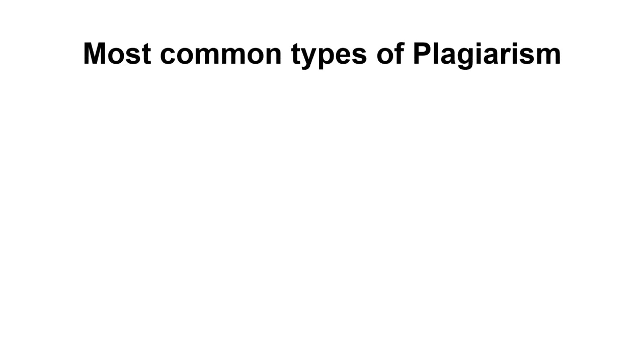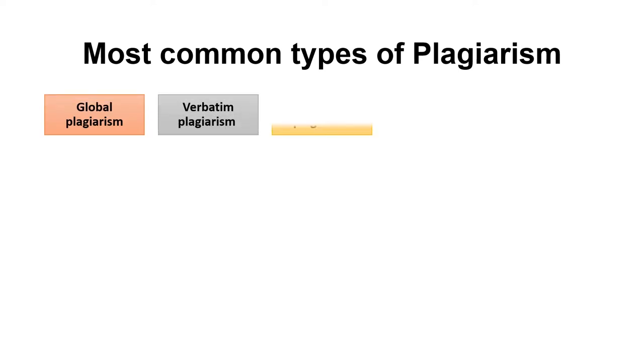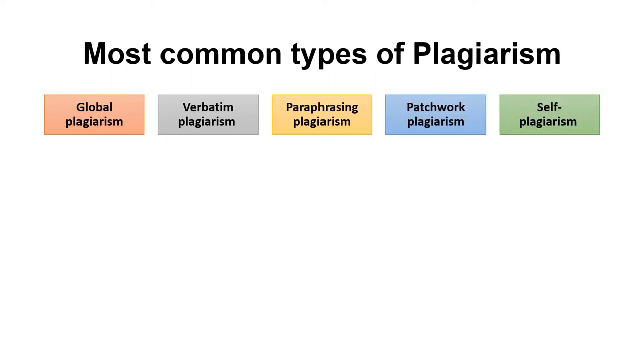Let us see another very common classification. There is one classification suggested by Rimo, who suggested there are five types of plagiarism: global plagiarism, verbatim plagiarism, paraphrasing plagiarism, patchwork plagiarism, and self-plagiarism. You will find similarities across different classifications — please keep those in mind. When we talk about global plagiarism, we are talking about a kind where a person or researcher has taken an entire text from someone else and placed it in his or her paper as their own.